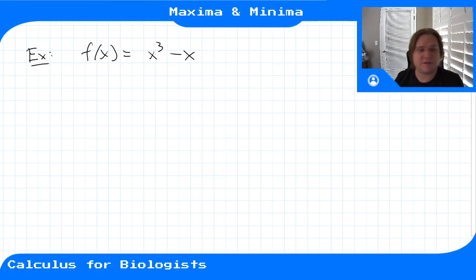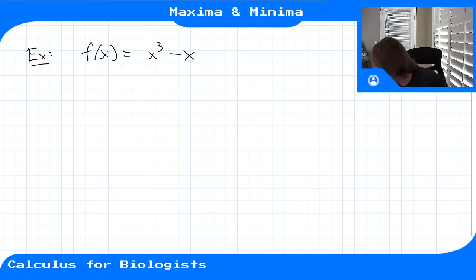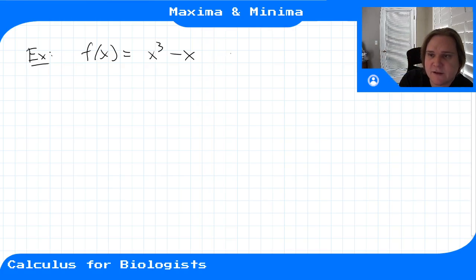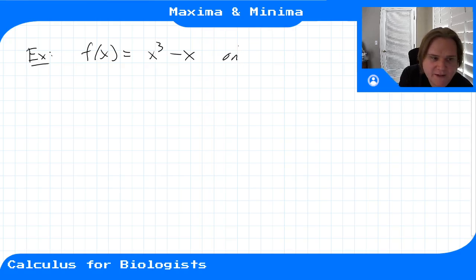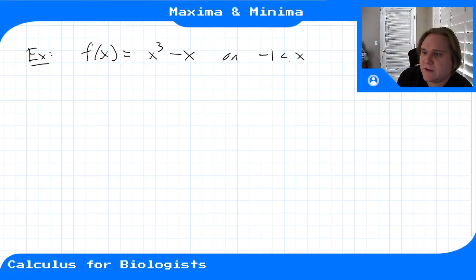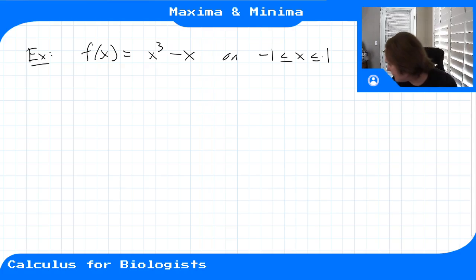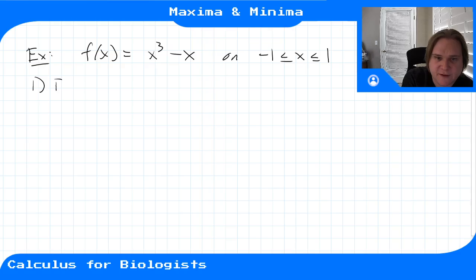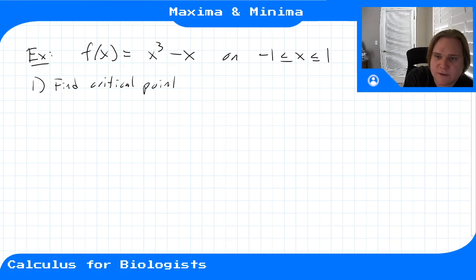We may have done something similar in a previous video or lecture. We want to find the local maxes, local mins, global maxes, and global mins of this function on the interval [-1, 1]. The first step is to find any critical points.